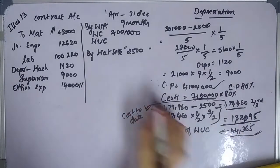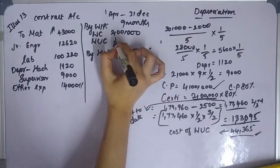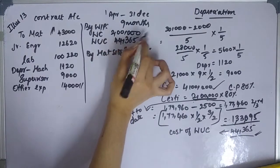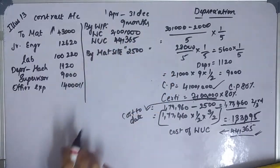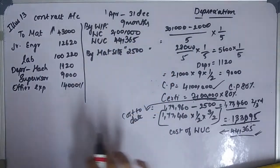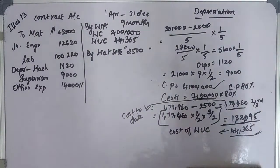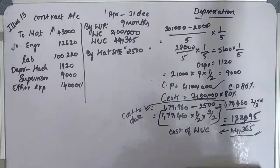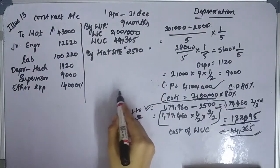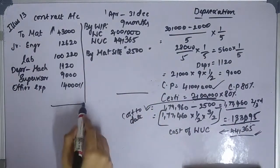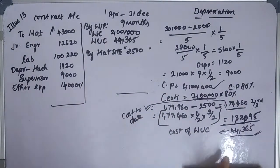The cost of work certified is 1,33,095. Using this method, we calculate: value of work certified (2,00,000) minus cost of work certified (1,33,095) gives the notional profit figure.